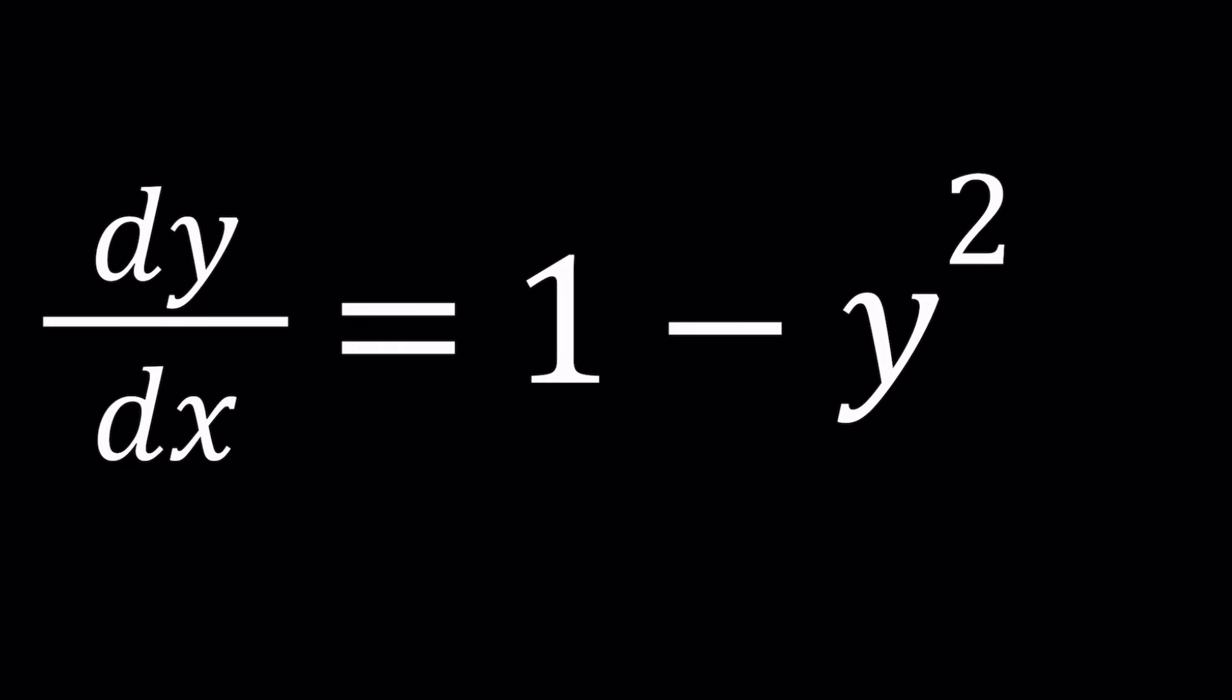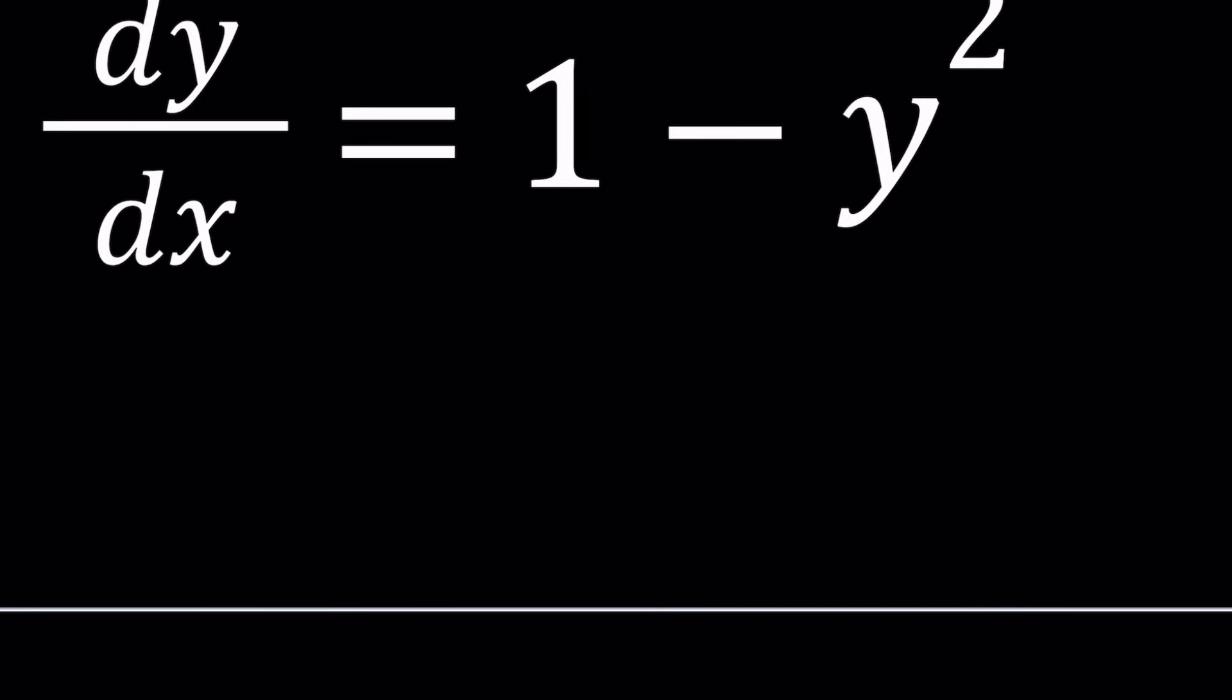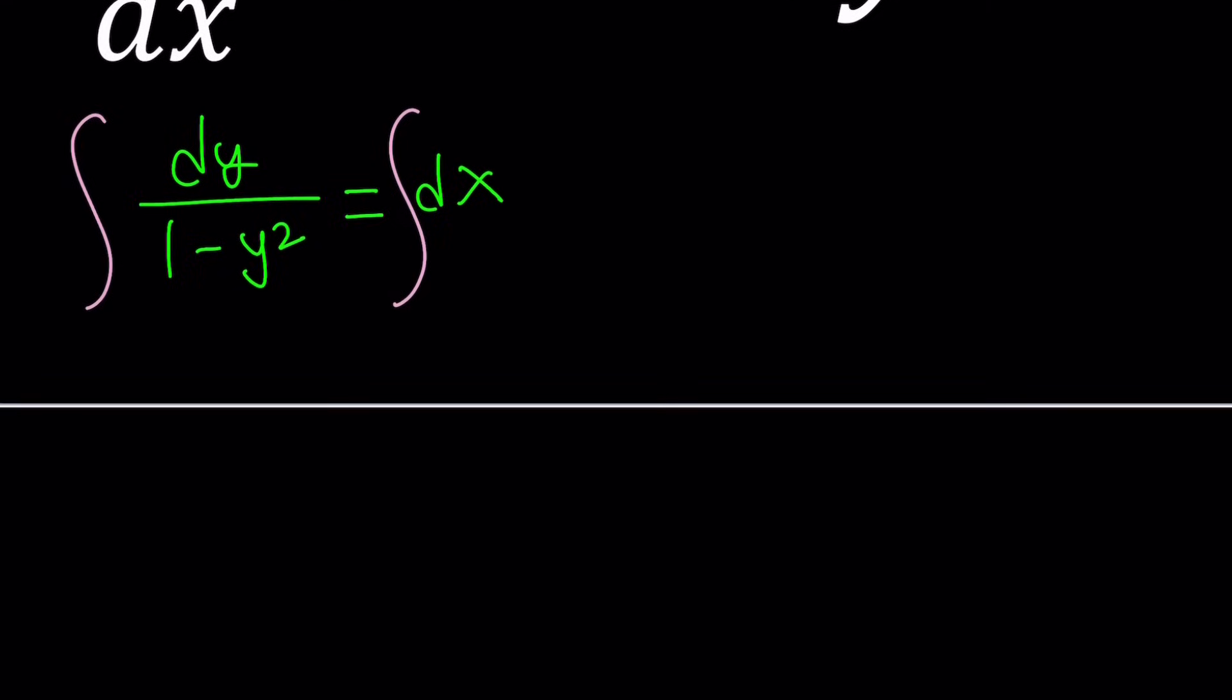So this is a separable differential equation. To separate the variables, I'm going to put the 1 minus y squared on the left hand side, and the dx on the right hand side. Some people say dy over dx is not a fraction, you can't multiply both sides by dx, but it is a fraction, no matter what people say. So the next step would be to integrate both sides, and because the variables are separated, we should be able to integrate easily.